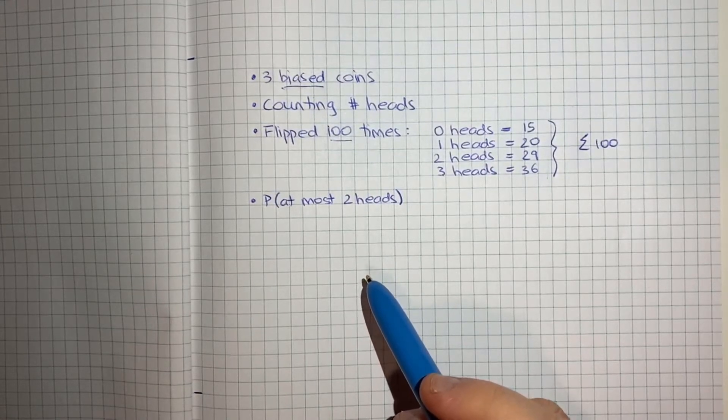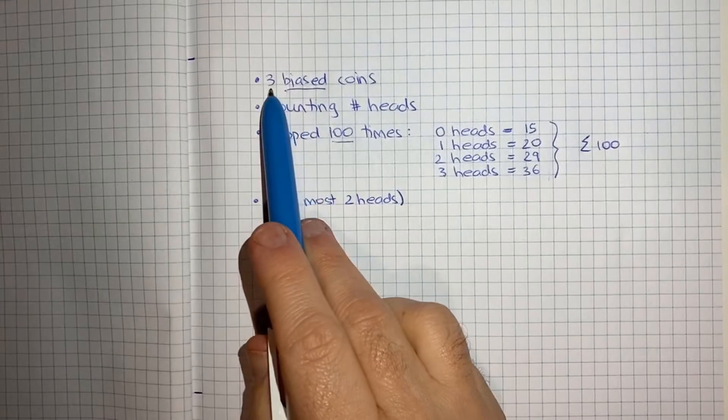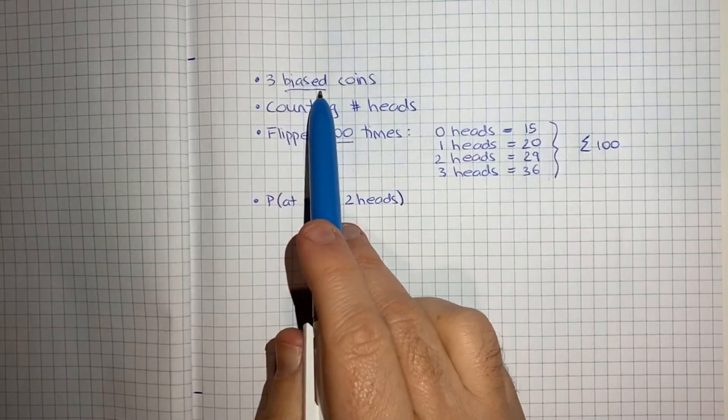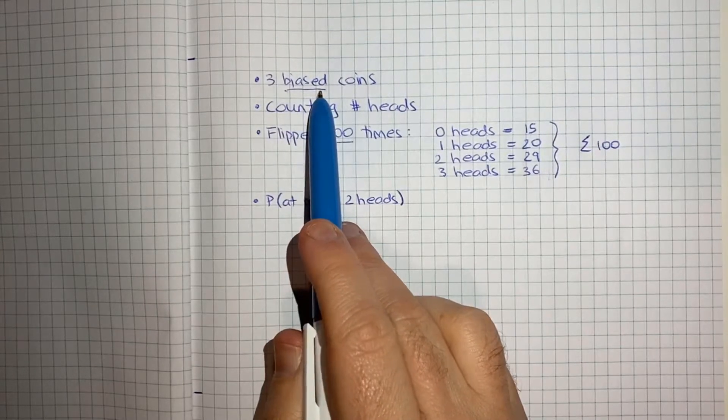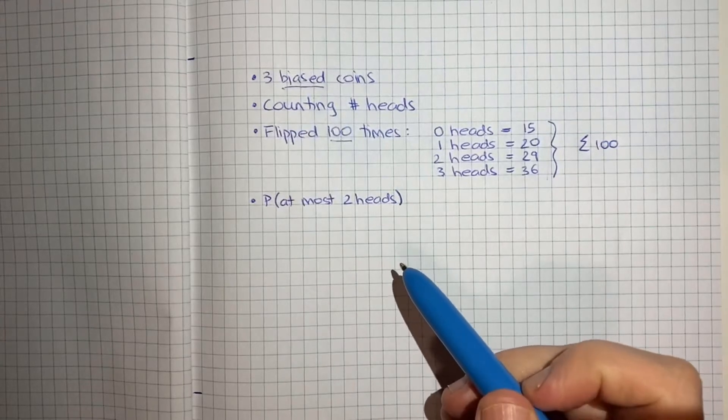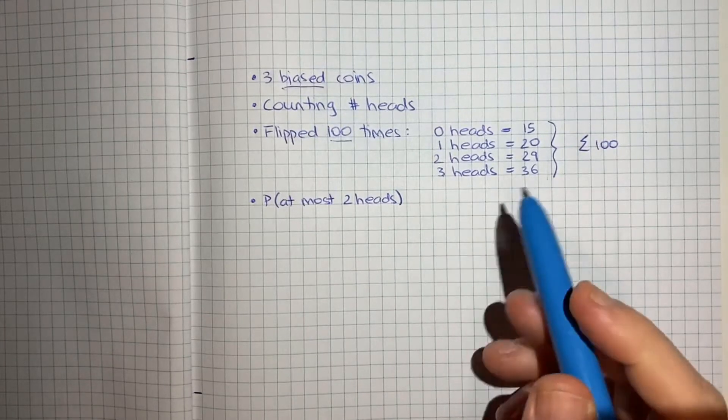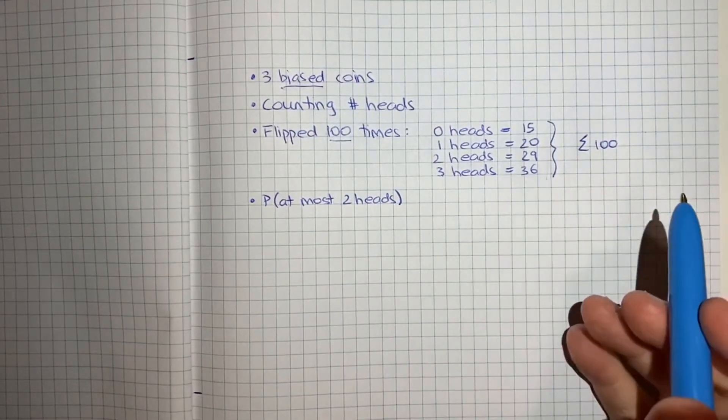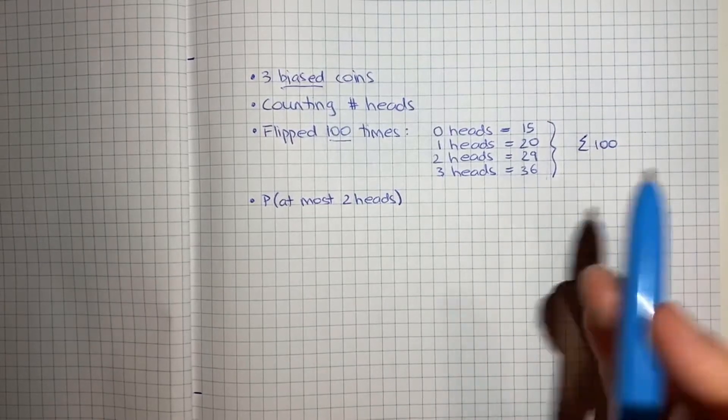So the basic facts of the problem are that we've got three coins and they're biased, and what that means is each time you flip the coin the probability of a head or a tail isn't 50-50 like it would normally be, it's going to be something else.